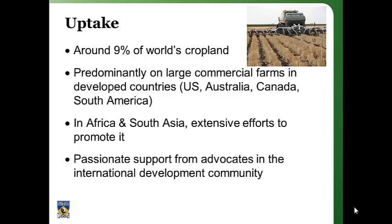Around the world, there's been quite a large area of uptake of this package. Someone's estimated that around 9% of the world's cropland is cropped using something like conservation agriculture. But predominantly that area is on large commercial farms in developed countries — the US, Australia, Canada, and parts of South America.